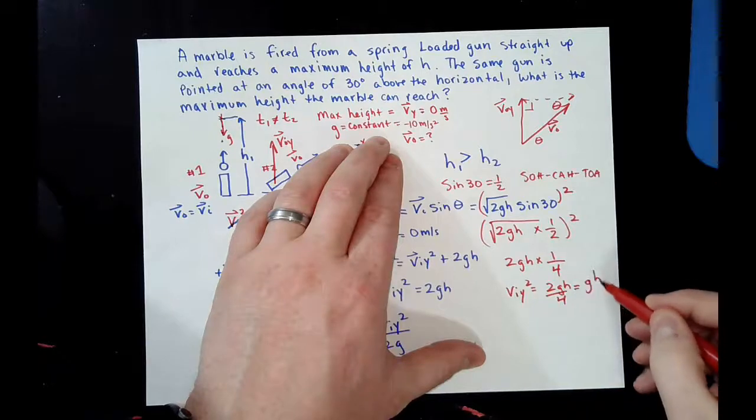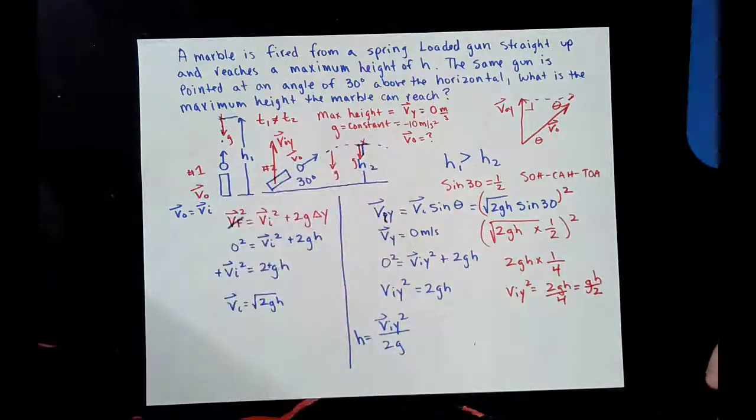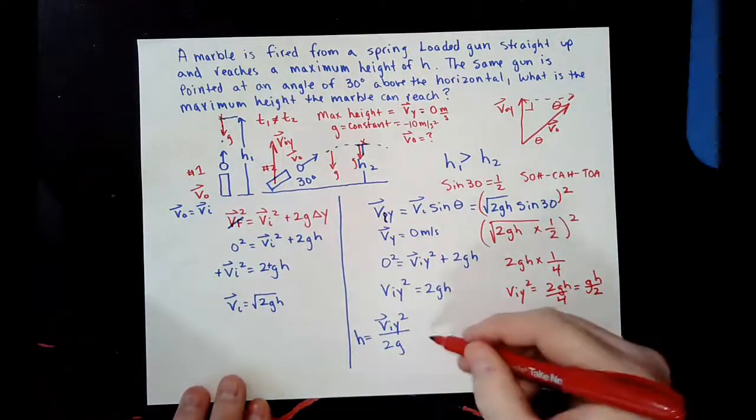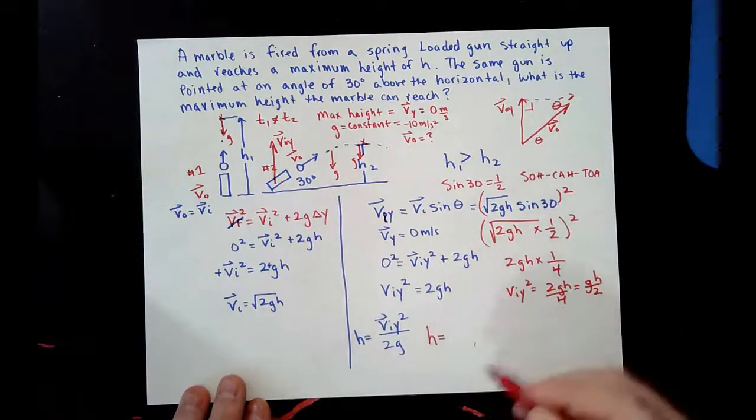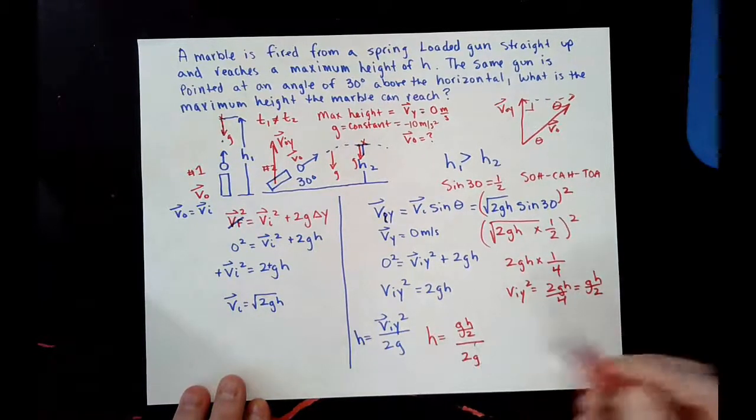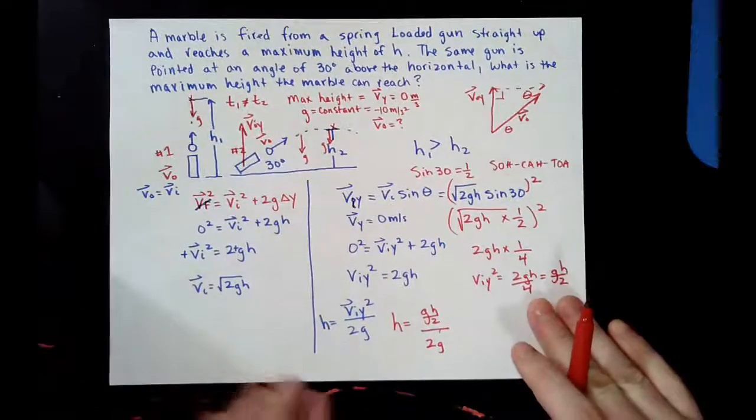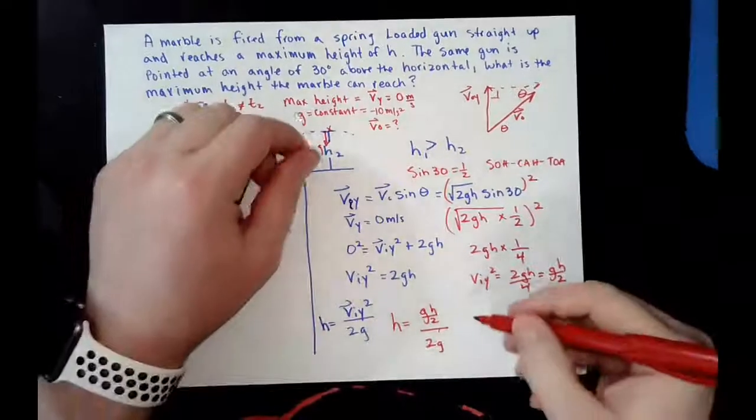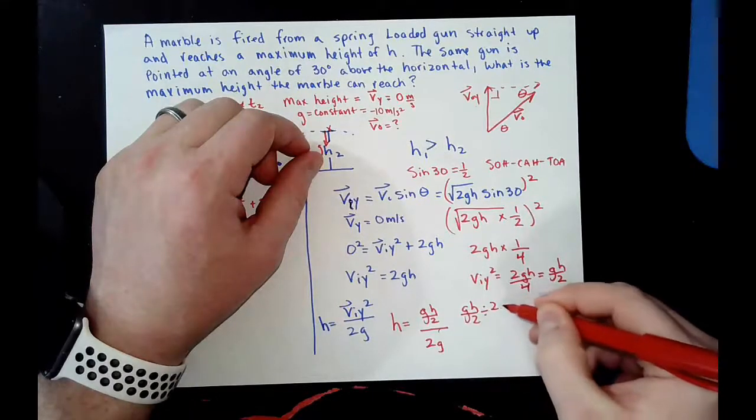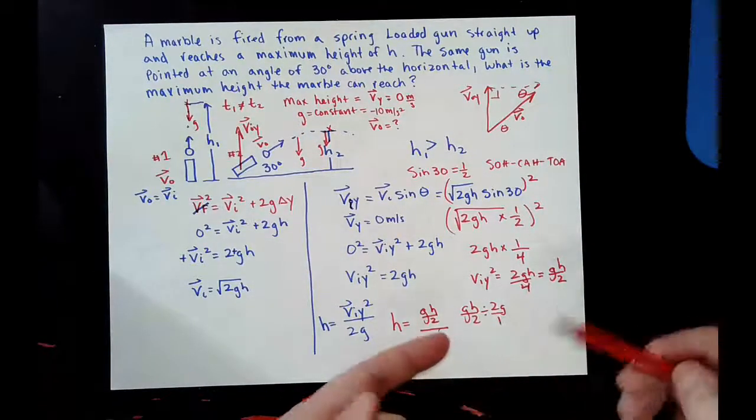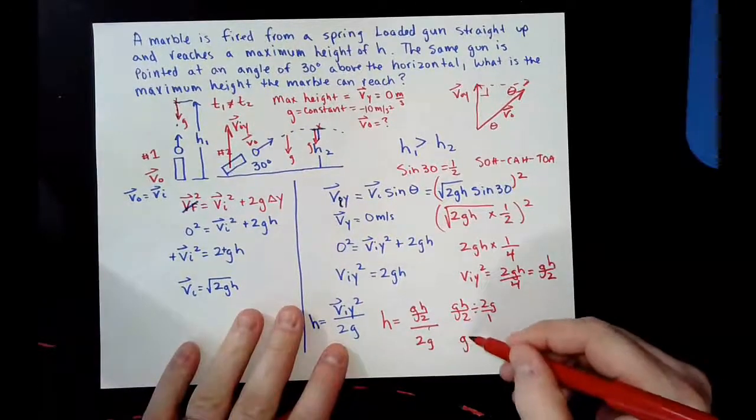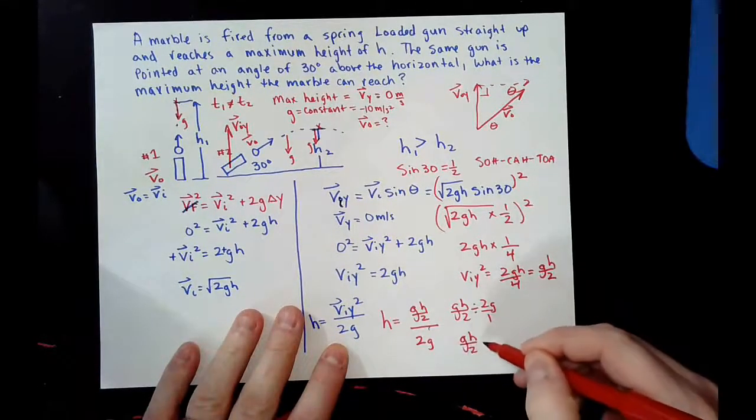So, now, we're going to take this and plug it in right here. So, the height component will equal gh all over 2 divided by 2g. And since when we were dividing by a fraction, so, gh over 2 divided by 2g, this is over 1, we've got to do the flip. So, you have gh over 2 being multiplied by the reciprocal of that, which is 1 over 2g.